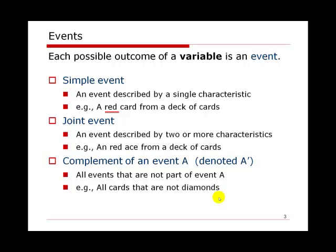If we draw a card from the bridge deck but this time we are not only looking at the color but also look at the value, which means we use two characteristics to describe the event, then this event will become a joint event. For example, a red ace from a deck of cards — the color is red and the value is ace. So for any event described by two or more characteristics, this event will become a joint event.